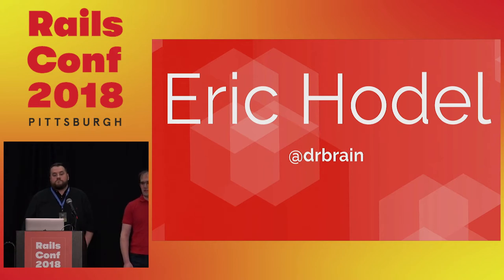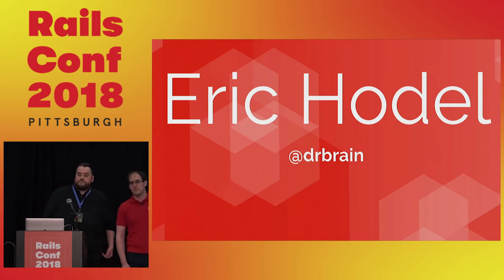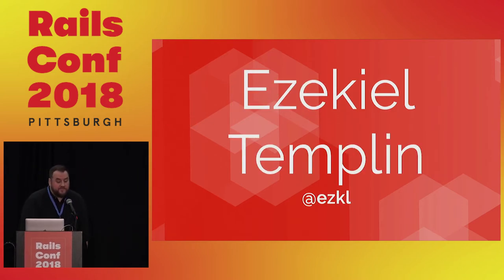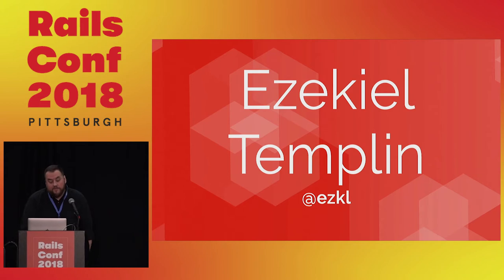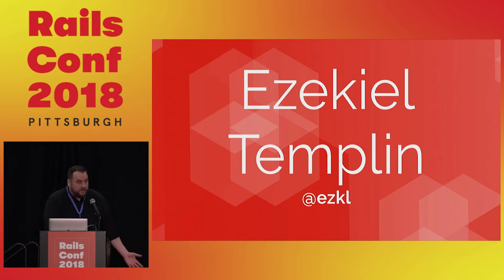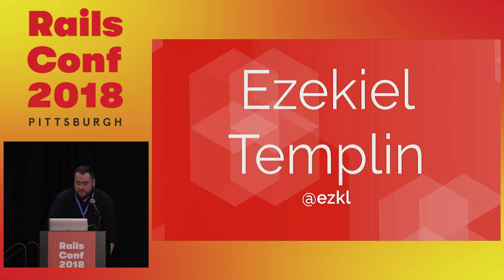I've written a lot of Ruby code, some of which you use every day. My name is Ezekiel Templin, I'm at EZKL on most places on the internet. I've been writing software of one kind or another for more than 20 years. We currently work within Fastly's site reliability engineering organization focusing on improving the internal engineering experience.